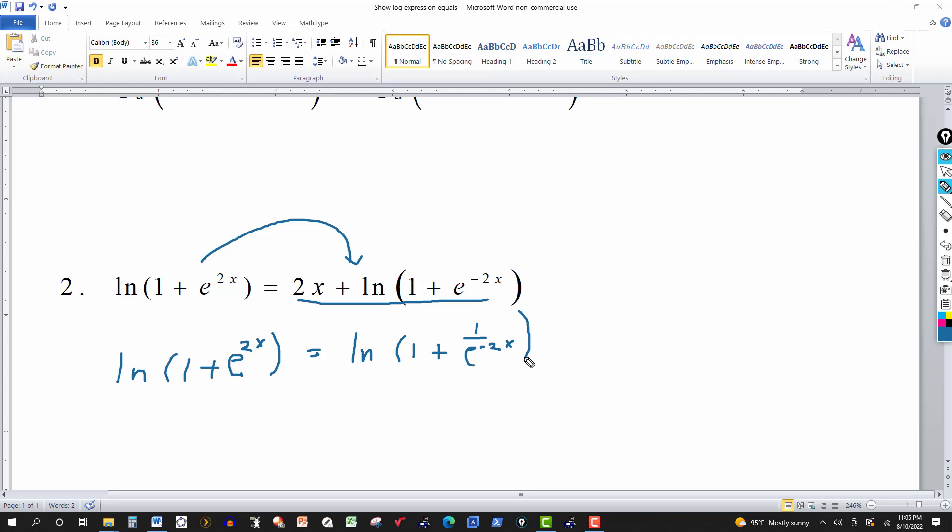And here, I'm using the basic definition of negative exponents. So I'm actually taking the e to the 2x. I'm saying that e to the 2x is the same thing as 1 over e to the negative 2x. The equivalent.